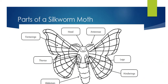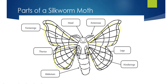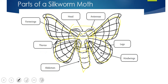Here are the parts of the silkworm moth: the forewings at the front and the hind wings at the back. There are six legs, and the head has the antennae. The thorax is in the middle and the abdomen is at the end. This is a very similar body design for insects.